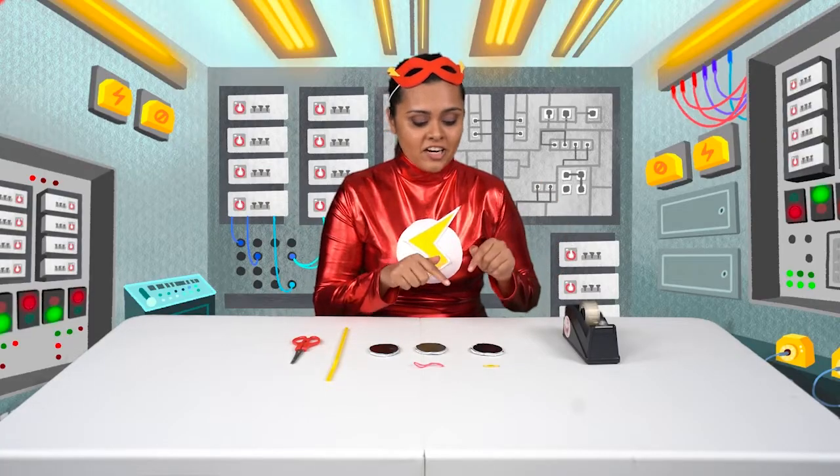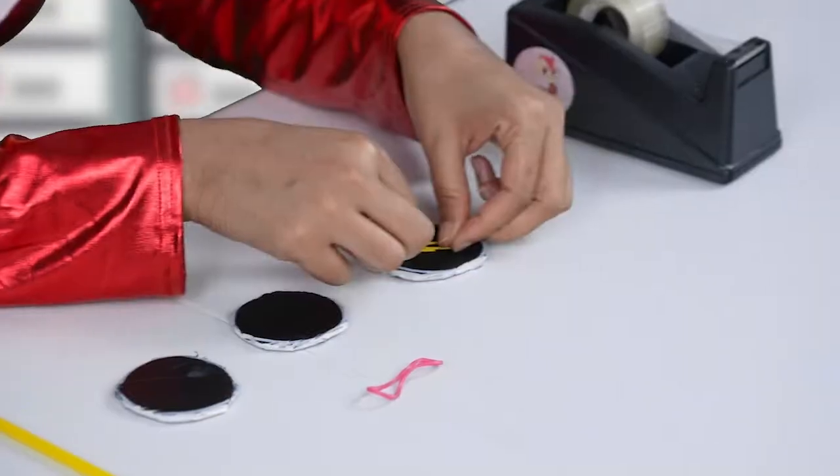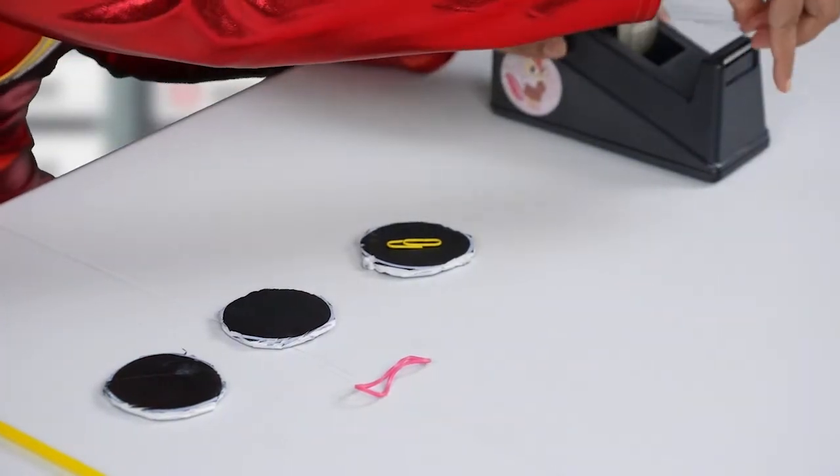So go ahead and stick each item to your circle. We'll start with a paper clip, place it down in the middle, grab some tape, and stick it nicely down onto the circle.